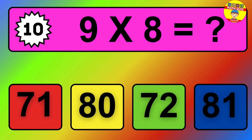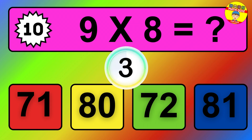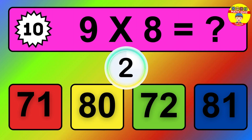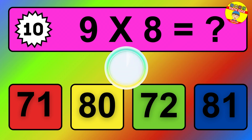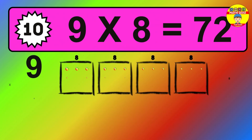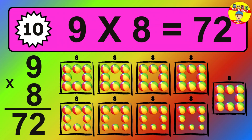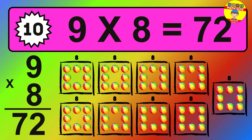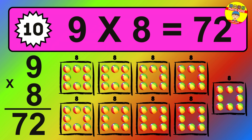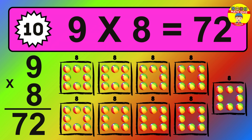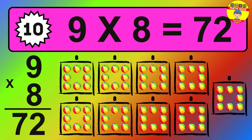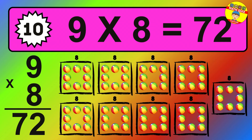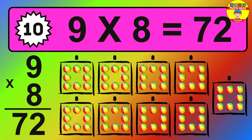Question ten: nine times eight equals what? The answer is: nine times eight is seventy-two. To calculate, we have nine groups with eight balls each one. So how many balls do we have? 72 balls.